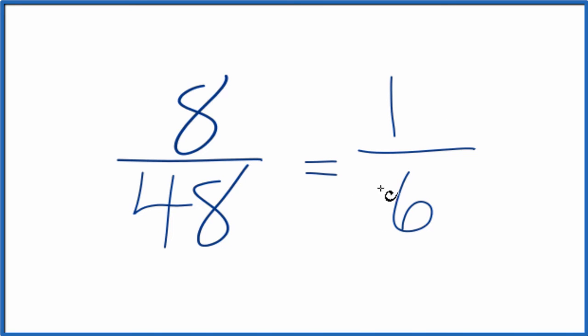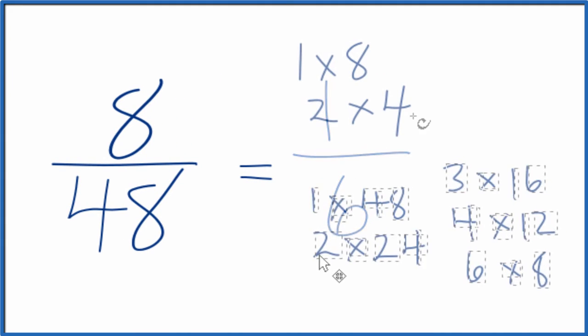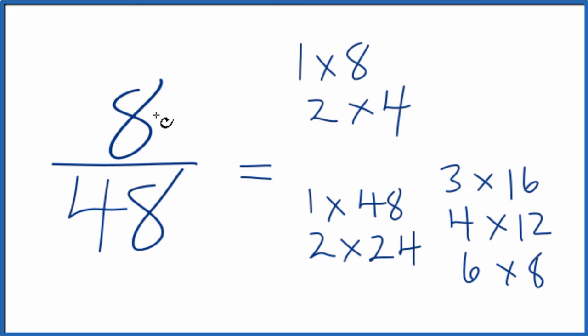The other way you could do this is write the factors for 8 and 48 and find the greatest common factor. So when we look at the factors for 8 and 48, we see the greatest common factor is 8 right here.